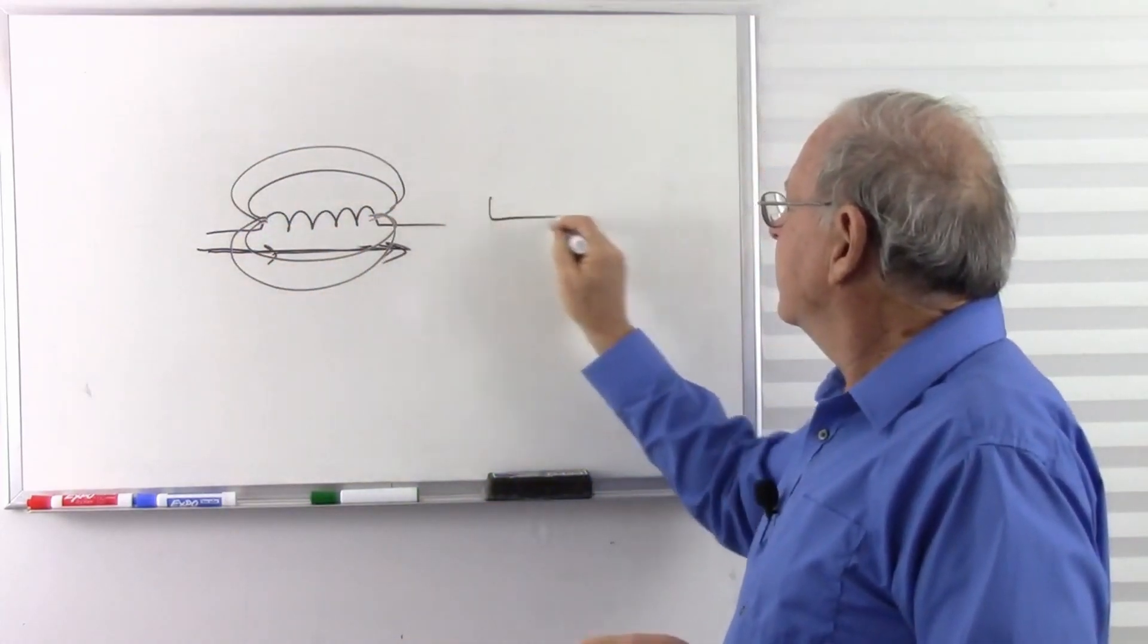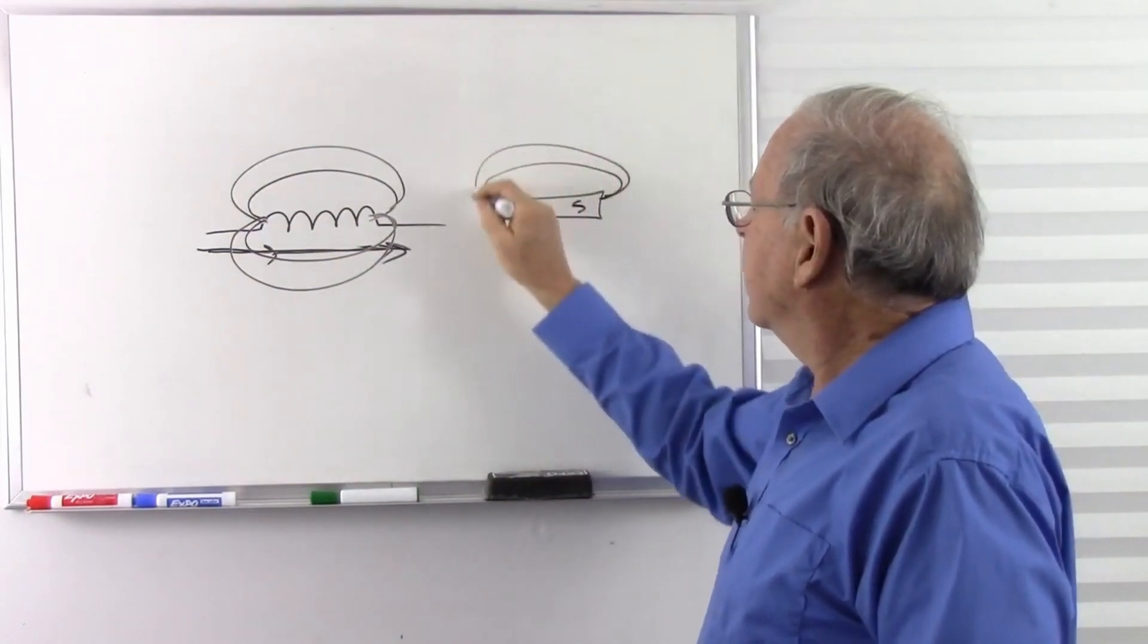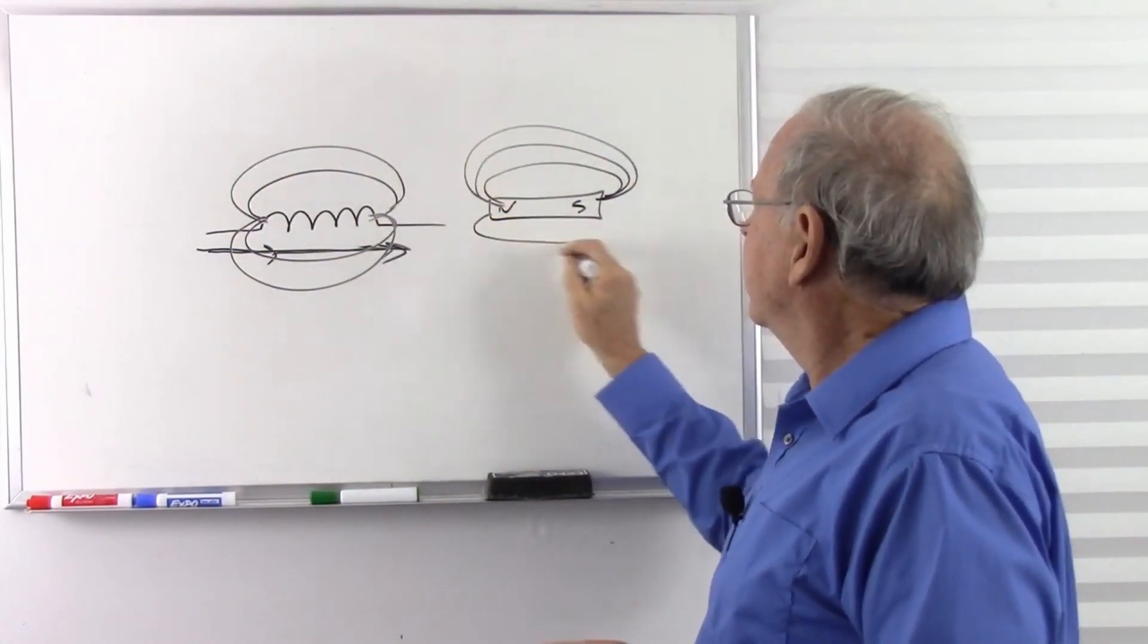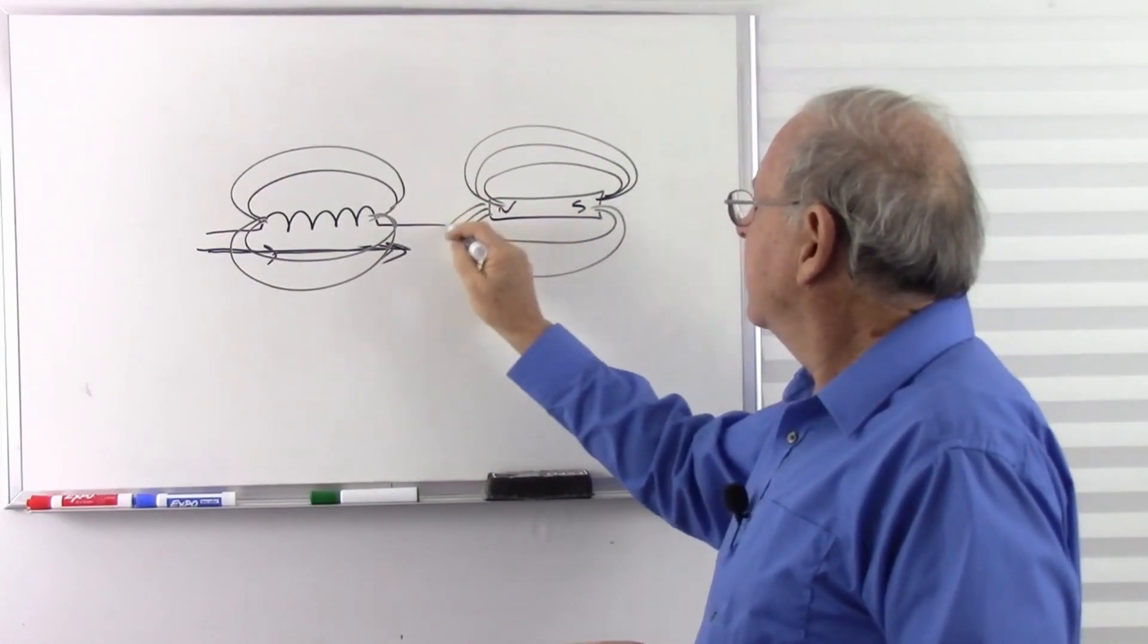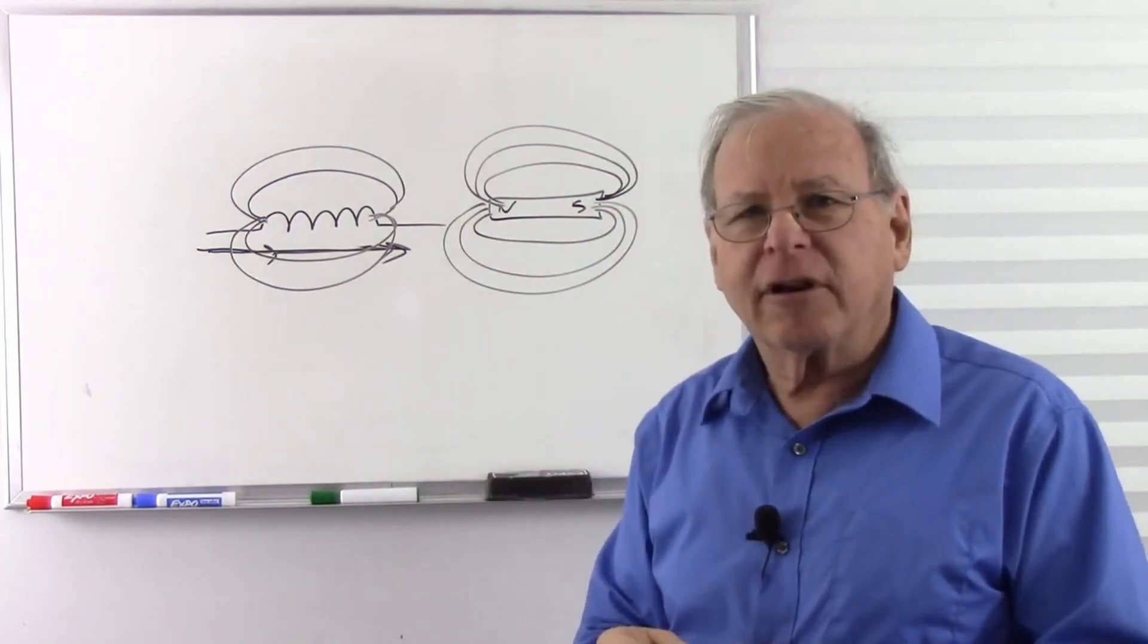Sort of like a bar magnet has a magnetic field around it. It looks very similar to the magnetic field around an inductor. When we have a current going through an inductor, does it act like a magnet?